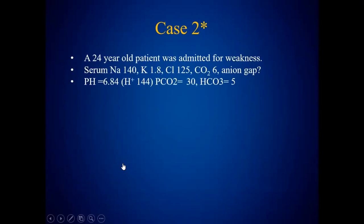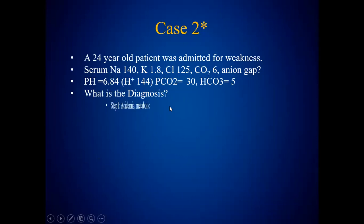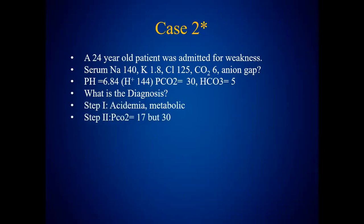Next case: a 24-year-old patient admitted with weakness. Sodium 140, potassium 1.8 — possibly the cause of weakness — chloride 125, bicarbonate 6. Anion gap is not given. pH is 6.84, which is low — acidemia or acidosis. Bicarbonate of 6 favors that, so there is a metabolic acidosis. Step one is metabolic acidosis.